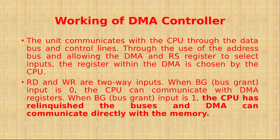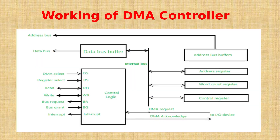The unit communicates with the CPU through the data bus and control lines. There are two different modes based on the bus grant (BG) signal. When BG equals zero, the CPU can communicate with the DMA register. When BG equals one, the CPU relinquishes — that is, releases — the bus, and the DMA can directly communicate with memory.